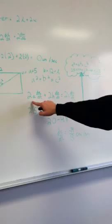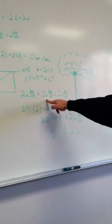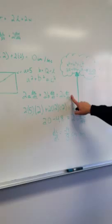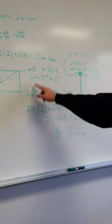So starting from A squared plus B squared equals C squared and finding the derivative, you get 2a·(da/dt) plus 2b·(db/dt) equals 2c·(dc/dt).